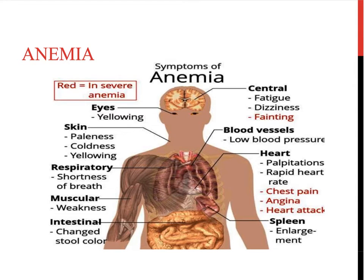Signs and symptoms of anemia include fatigue, low blood pressure, and rapid heart rate. The intestinal wall might show a change in stool color, especially if the patient is bleeding — a GI bleed would cause dark, tarry stools or obvious blood in the stool. The patient is weak, short of breath, pale, and cold, generally not feeling well because they are not getting enough oxygen to the tissues.